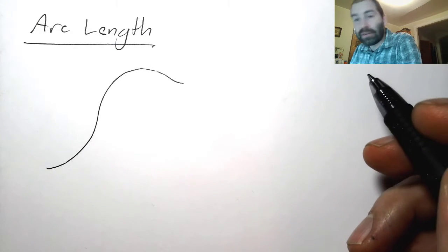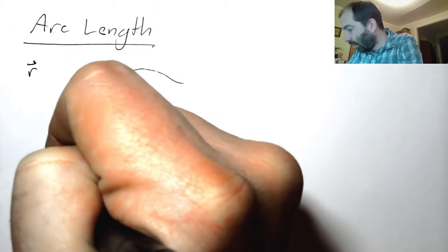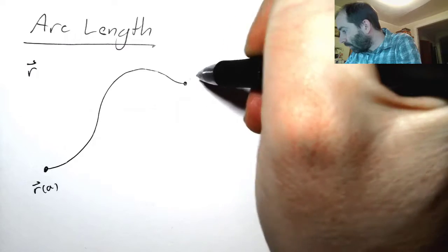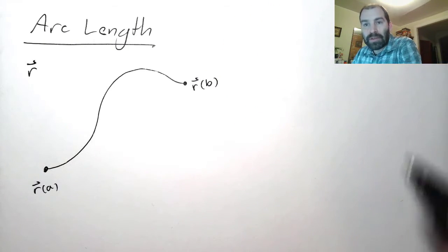So our vector function is the vector function r. And this will be r of a, and it will go up to r of b. So how are we going to measure this?